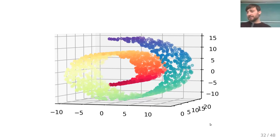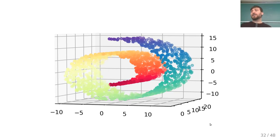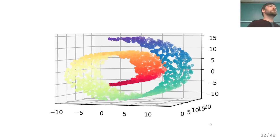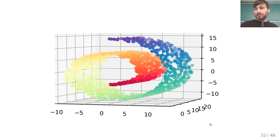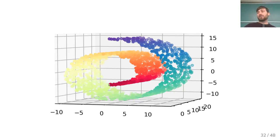Why is this called manifold learning? A manifold is an embedding of a lower-dimensional space into a higher-dimensional space. In this 3D image of what's called the Swiss roll, there's a two-dimensional space like a ribbon embedded into 3D space. The goal is to unroll the Swiss roll and identify the underlying two-dimensional space. Points that are close on the data manifold are more similar to each other even if they're farther in Euclidean distance.